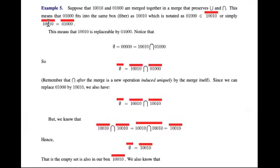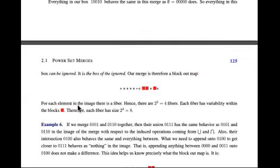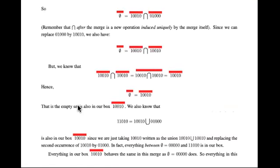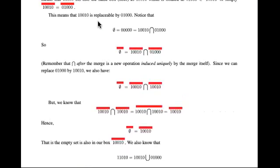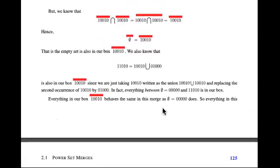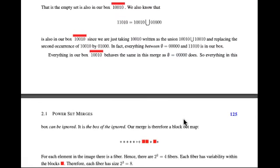So notice that outside those positions, I guess we just got zeros, right? Which means that we just got zeros. So that means that it behaves. In fact, we got that. It's in the same boxes as the zero, zero, zero, zero. So it's basically the empty subset or the empty set fiber. The fiber that with the empty set.